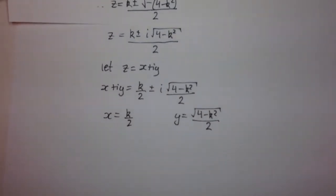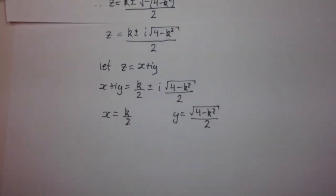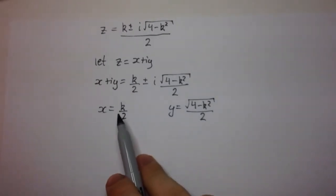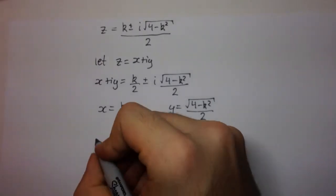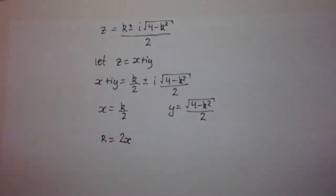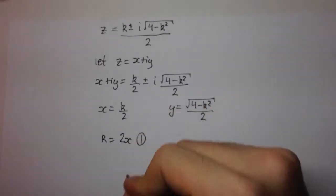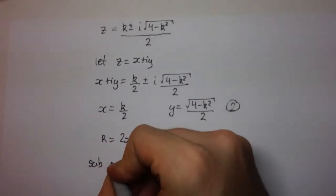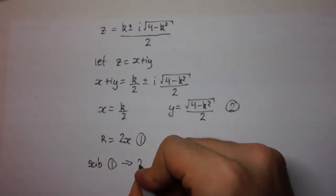And now, what do we have? We have two parametric equations where the parameter is k. Remember, k was just a real number. So, we can say from here that k is equal to 2x. And we can call this equation 1. And we can call this equation 2. And substitute 1 into 2.